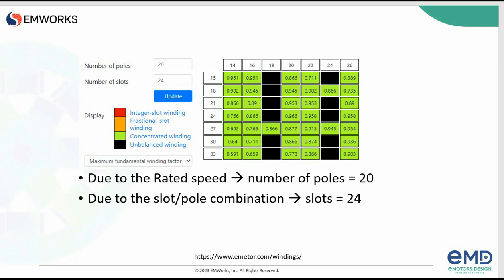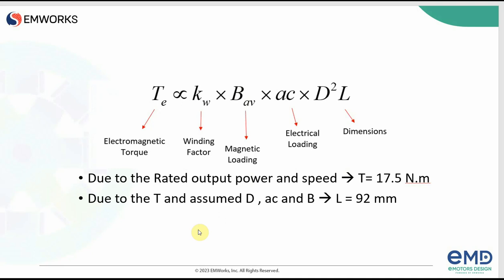As we have 300 RPM, we need 20 poles. For a 20-pole machine, due to the slot-pole combination, we choose 24 slots for the stator — so the combination is 24 slots and 20 magnets. This slot-pole combination has the maximum winding factor. The electromagnetic torque formula shows that torque depends on magnetic loading, electrical loading, and the dimensions of the machine.